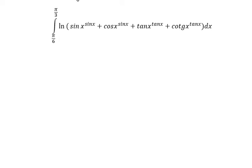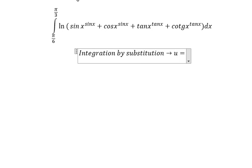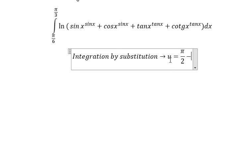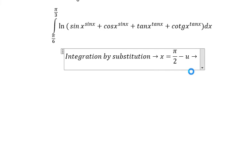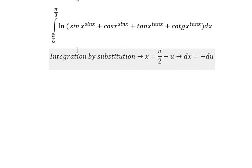Now we need to use integration by substitution. We put U equals π over 2 minus S, so S equals π over 2 minus U, and dS equals negative dU. Then we need to change the boundaries.